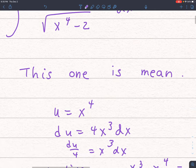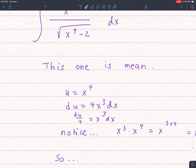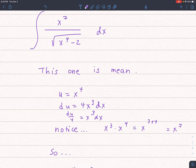And I notice that x to the 3rd times x to the 4th is nothing more than x to the 7th, which is what's in my numerator, then I have found my u-substitution. Not at all obvious.